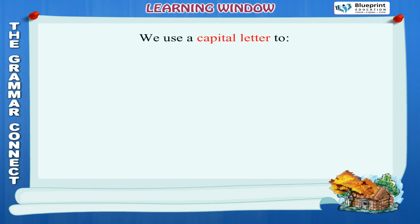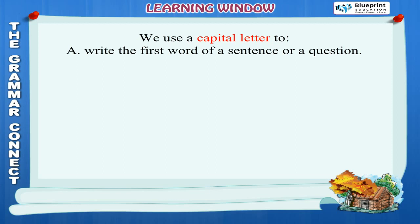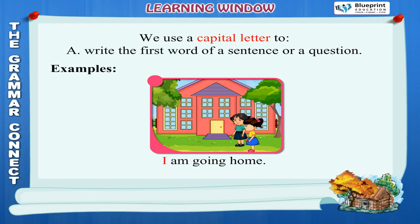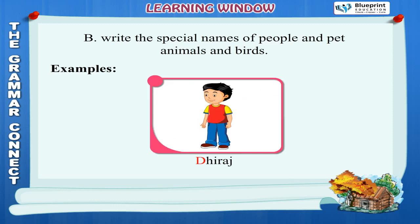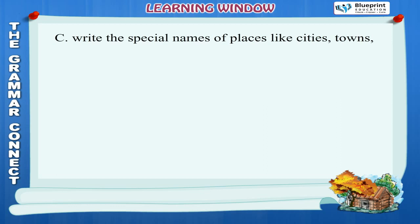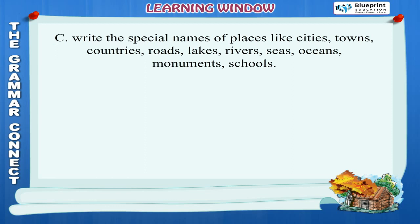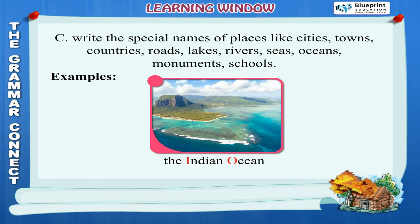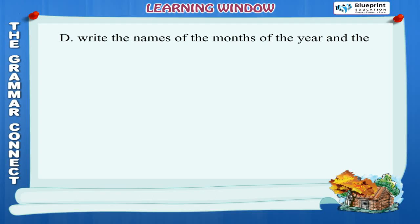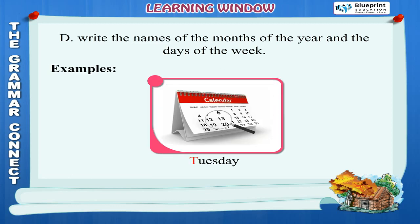We use a capital letter to: (A) Write the first word of a sentence or question. Examples: I am going home. What is your name? (B) Write the special names of people and pet animals and birds. Examples: Mala, Dheeraj, Cooper. (C) Write the special names of places like cities, towns, countries, roads, lakes, rivers, seas, oceans, monuments, schools. Examples: Jaipur, India, Mall Road, Naini Lake, the Yamuna, the Indian Ocean. (D) Write the names of the months of the year and the days of the week. Examples: June, August, Tuesday, Sunday.